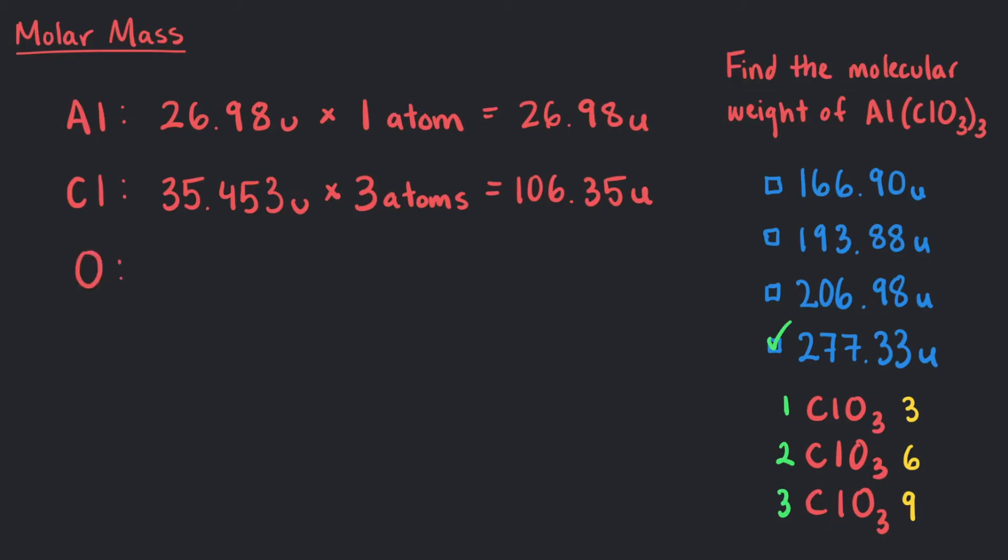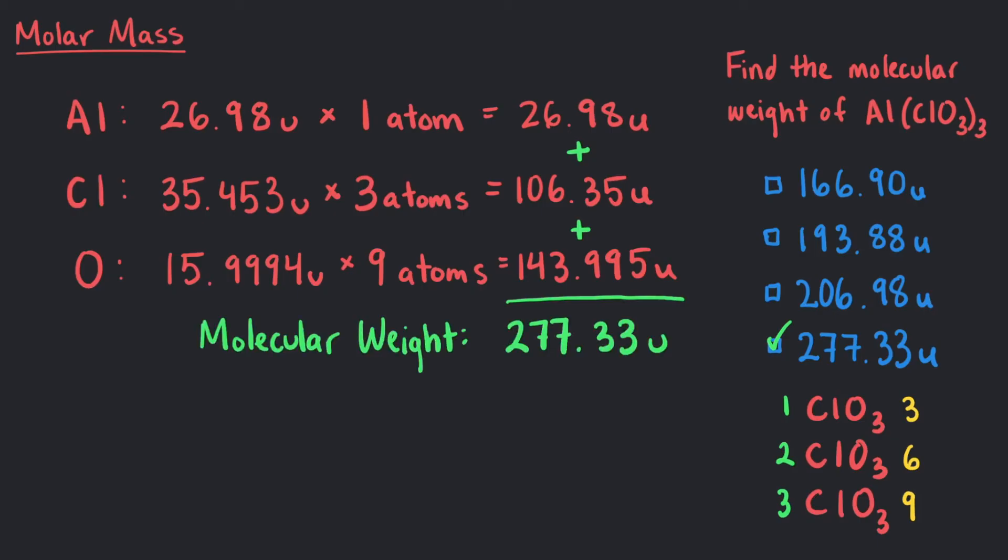And for the Oxygens, 15.9994U times 9 Oxygen atoms is 143.995U. After adding all of these together, we have a molecular weight of 277.33U.